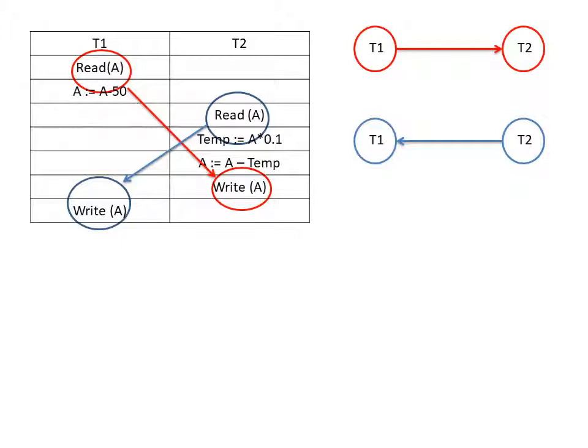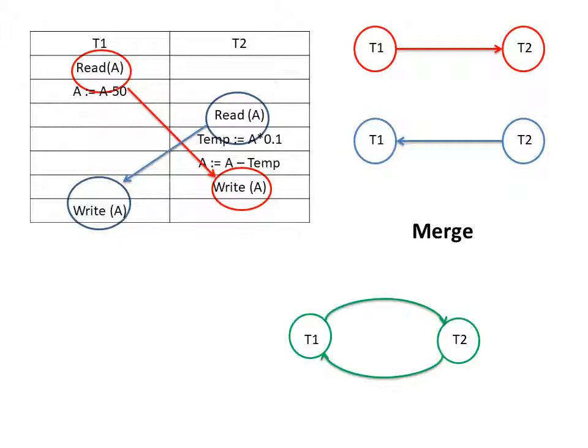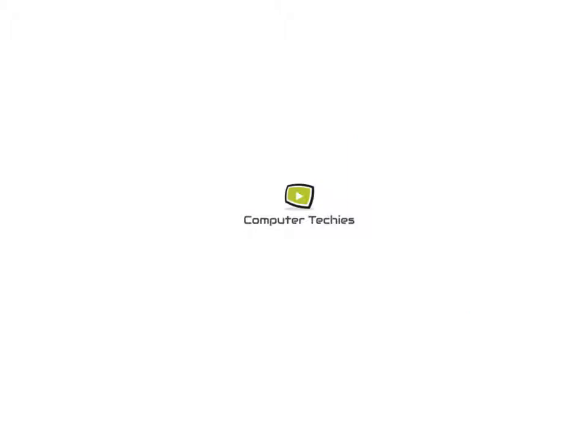If any more read-write pairs exist, we continue adding edges. If not, we merge all the individual graphs we have developed for each read-write pair. After merging, we get the final graph where T1 and T2 have an edge from T1 to T2 and another edge from T2 to T1. This is the required precedence graph, which can be used to find conflict serializability.